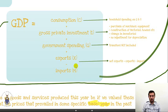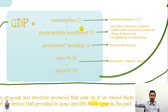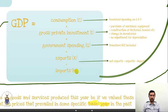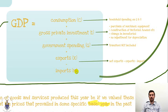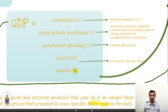Then we've got imports. Households, investment, government — they can all be spending money either on goods made within the country or by buying goods made outside of the country. If they bought goods from outside of the country, that is an import. If it was bought from outside of the country, that is not our GDP — that is someone else's GDP. Those goods were produced somewhere else. Therefore any spending on goods from outside of the country, in other words imports, must be subtracted from the spending that these groups did.